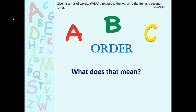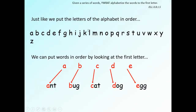ABC order — what does that mean? When we look at the alphabet, we see it going in order from A all the way to Z. We want to look at words by their first letter. The word 'ant' starts with A, so it goes first. 'Bug' starts with B, so it goes second. 'Cat' starts with C, that goes third. 'Dog' starts with D, that's next. And 'egg' starts with E, so it goes at the end of the list.